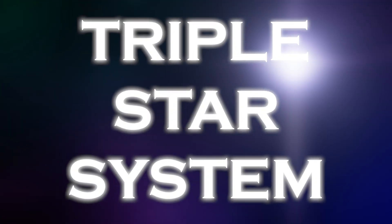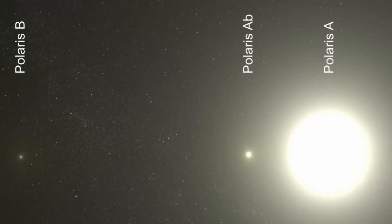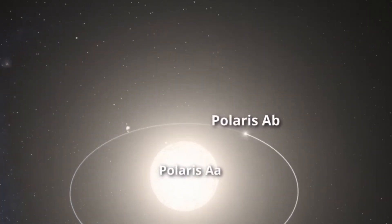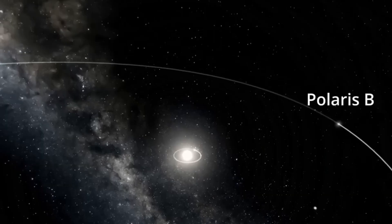Despite its appearance as a lone star, it is actually part of a rather complex triple star system. Within this system, the primary stars are Polaris AA and Polaris AB, which, seen with the naked eye, look like a single star.